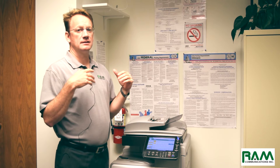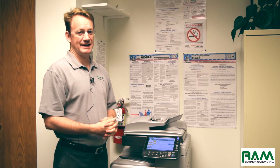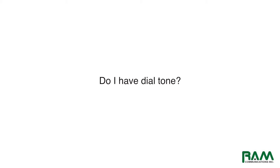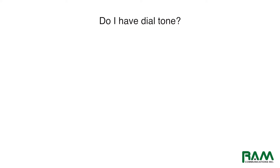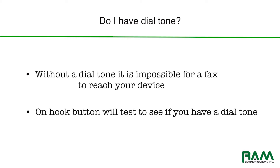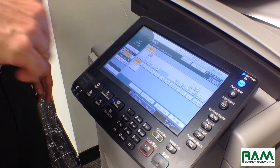If we have inbound fax issues, one of the first things we advise people to take a look at is their machine. Number one: do I have dial tone? If I don't have dial tone to my machine, then it is impossible for anybody in the outside world to reach me on my device. Some systems may just have a simple button that says on hook — the on-hook button is there to confirm whether or not you have dial tone. In this case, I've got a menu that I have to search through.